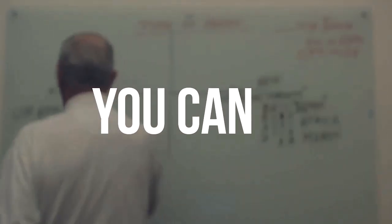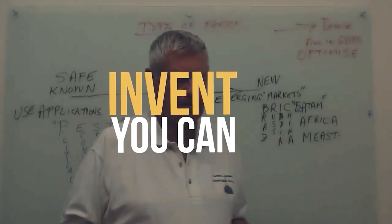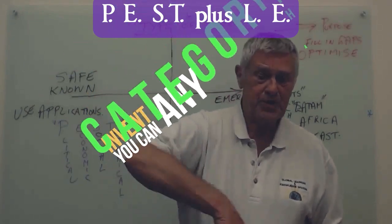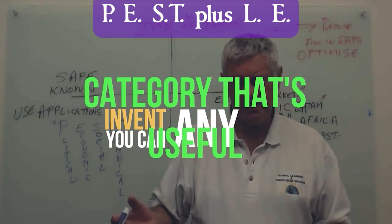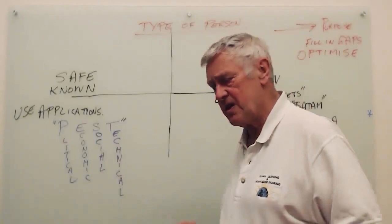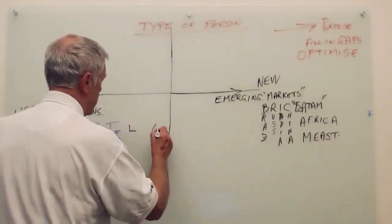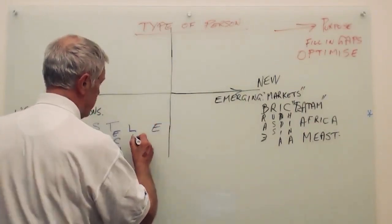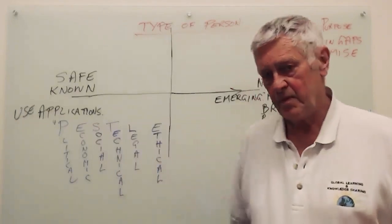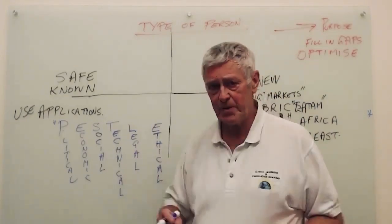There's also a development of this called PESTLE. A pestle is a container where you can grind things up — it just happens to be a word. What you do is add L-E: L stands for Legal and E stands for Ethical. You may think the legal environment and the ethical environment should be pretty closely coupled to each other, but in a lot of these emerging markets they're not.